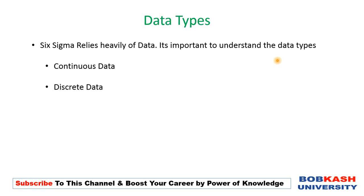There are basically two types of data we will encounter in the Six Sigma journey: one is continuous data and the other is called discrete data. These are the two primary categories we will always face in our Six Sigma projects. We will now see with clarity what continuous data really means and how it differs from discrete data.